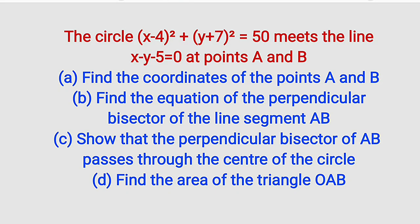Hello, good day viewers. Still on coordinate geometry, here is our problem for today. The circle x minus 4 whole squared plus y plus 7 whole squared equals 50 meets the line x minus y minus 5 equal to 0 at points A and B. First question, we are asked to find the coordinates of points A and B. Part B, we are asked to find the equation of the perpendicular bisector of line segment AB.